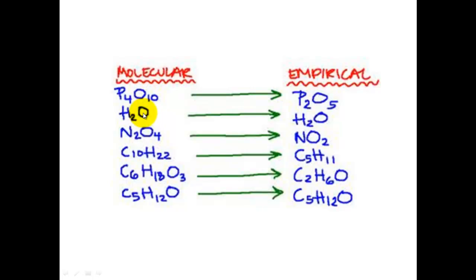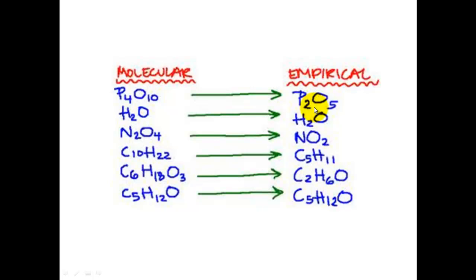Here are a couple of examples. For water, the empirical formula is the same as its molecular formula because it is already its simplest whole number ratio. But for most of the other ones, the molecular formula is different to the empirical formula — the empirical formula is just the simplest whole number ratio, obtained by dividing by a number.